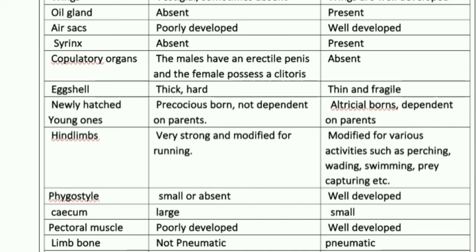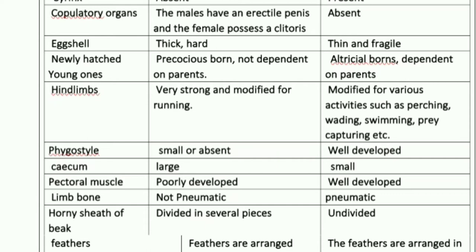For eggshells: since these are oviparous animals, in Ratitae the eggshell is very thick and hard, whereas in Carinate the eggshell is very thin and fragile. The next characteristic is the newly hatched young ones.